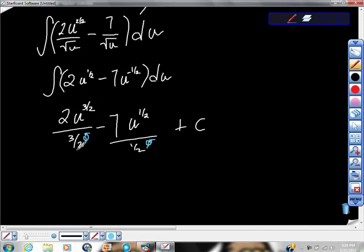So, in its simplest form, we'd have 4 thirds u to the 3 halves, minus 14u to the 1 half, plus c. And I'm offering you that as my answer.